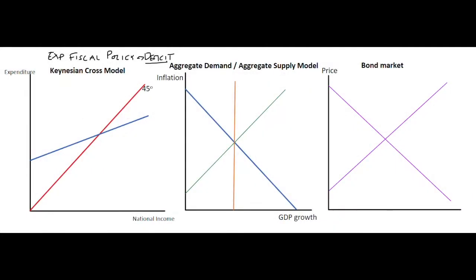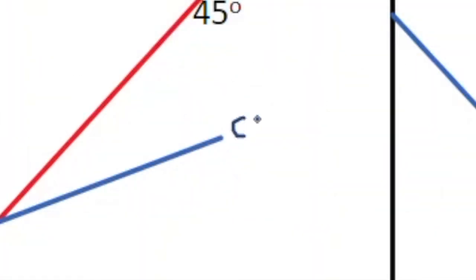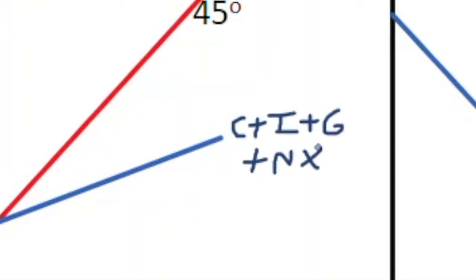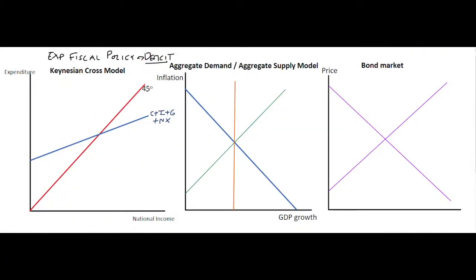We start off with a Keynesian Cross model. In the Keynesian Cross, we have expenditure in the economy — made up of C plus I plus G plus net exports — related to a 45-degree line which represents symmetry between expenditure and national income. The equilibrium point between expenditure and national income is represented by point A, giving us a spending level E0 and a national income level Y0.